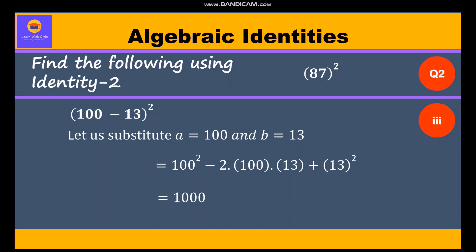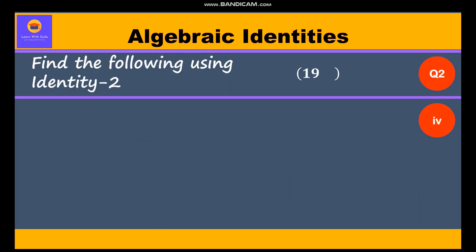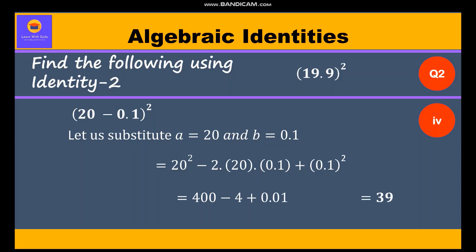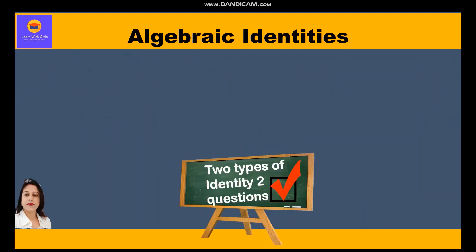Now we move to the fourth part: 19.9 whole square, which can be written as (20 minus 0.1) whole square. We substitute a equal to 20 and b equal to 0.1 in identity 2. We get 20² minus 2 times 20 times 0.1 plus 0.1², which equals 400 minus 4 plus 0.01, equal to 396.01. This is how we have solved two types of questions related to identity 2.